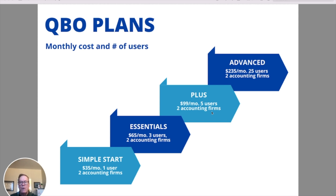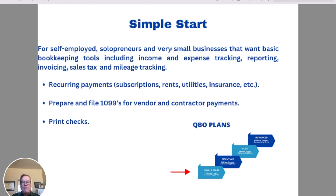First up is Simple Start — best for self-employed individuals, solopreneurs, and very small businesses that want basic bookkeeping tools, including income and expense tracking, reporting, invoicing, sales tax, and mileage tracking. Main features include recurring payments for subscriptions, rent, utilities, and insurance, as well as the ability to prepare and file 1099s for vendors and print checks.